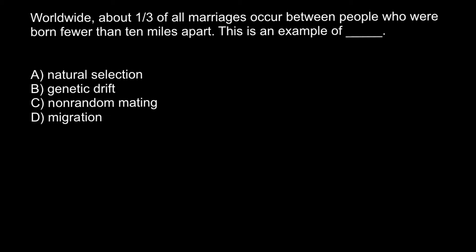Hello and welcome to Nikolai's Genetics Lessons. Today's problem is: worldwide, about one-third of all marriages occur between people who were born fewer than 10 miles apart. This is an example of what? And you have to choose the correct answer.